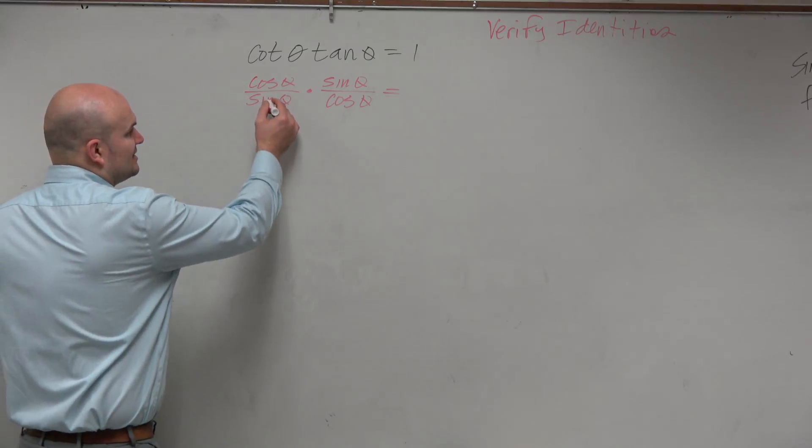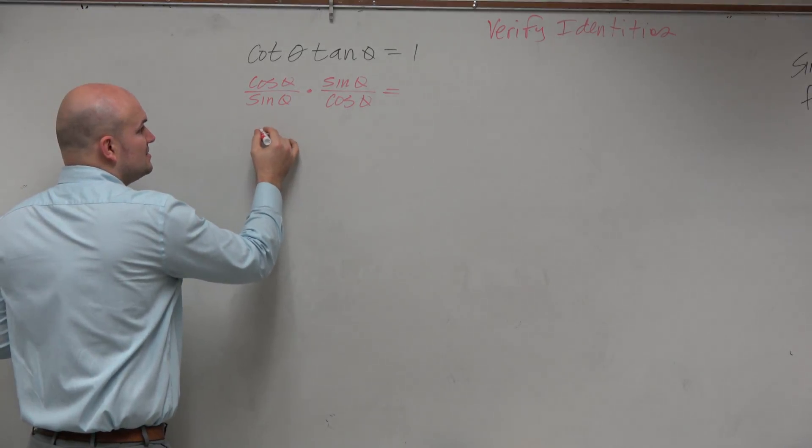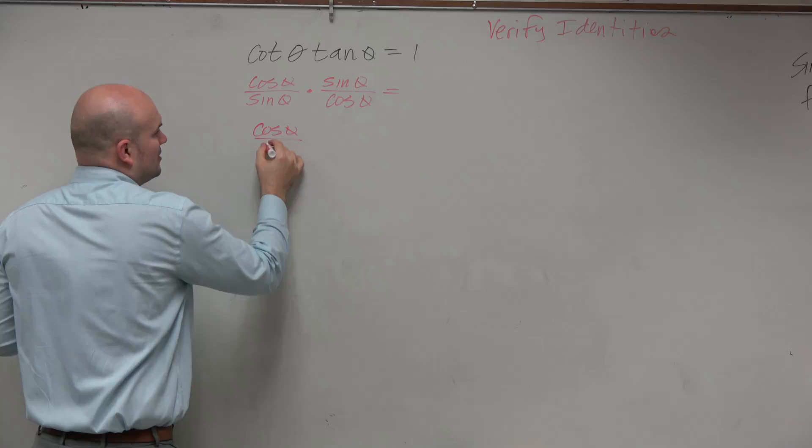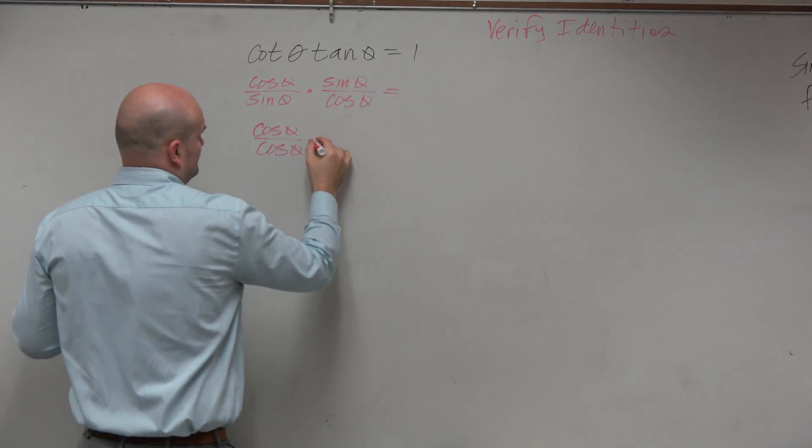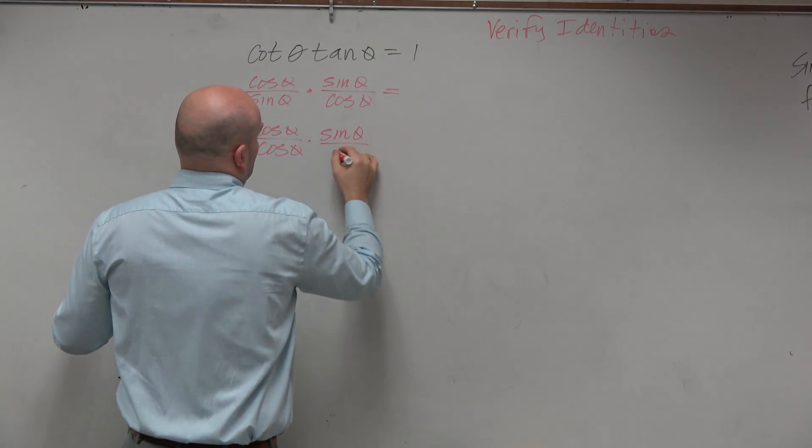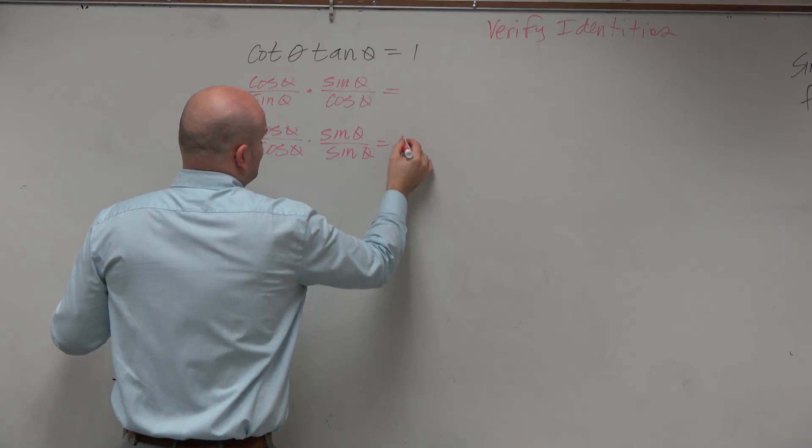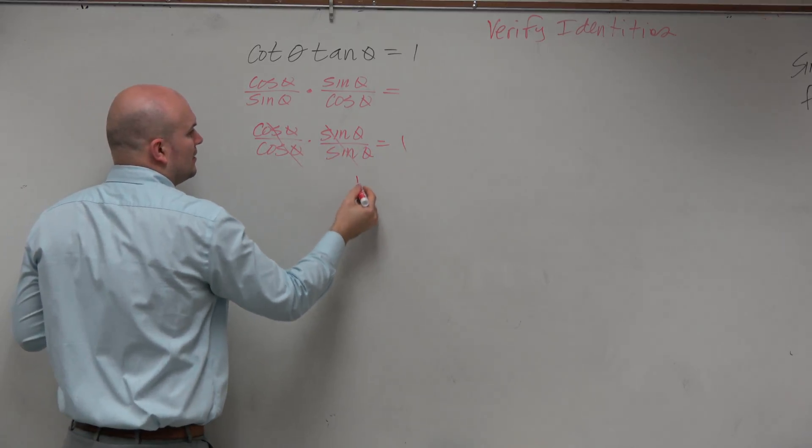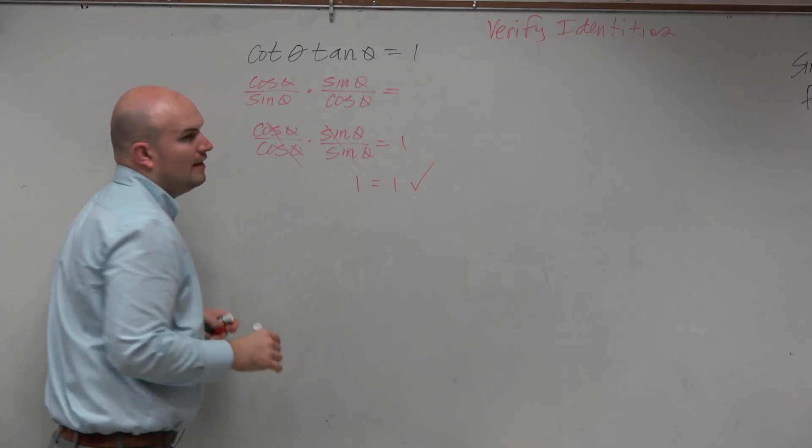So therefore, you can regroup these, associative property over addition or multiplication. You don't have to do this. I'm just showing you, oh yeah, 1 equals 1, and then it's been verified.